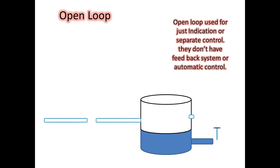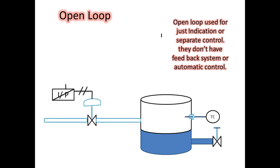An open loop is used for just indication or separate control. Open loops do not have feedback systems or automatic control.